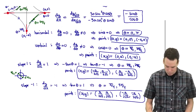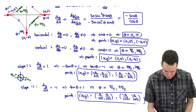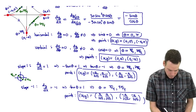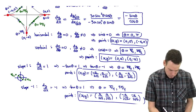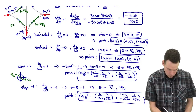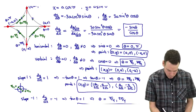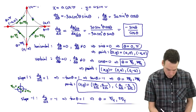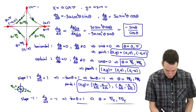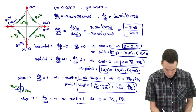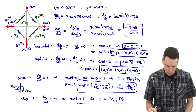In terms of the diagram, those points are here — theta equals 5π/4 for one, and theta equals π/4 for the one above it, where the slope is −1.